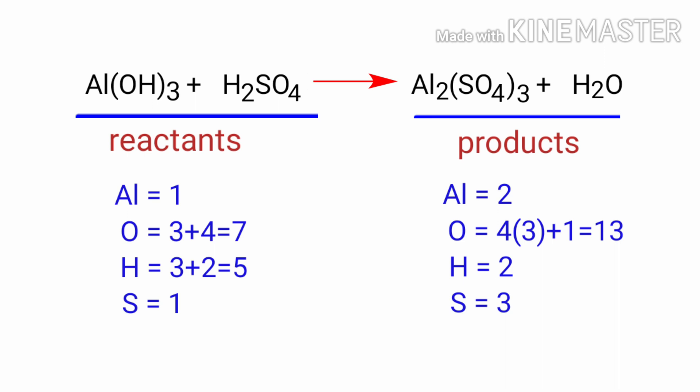To balance the chemical equation, we need to make use of coefficients. A coefficient is a number that we place in front of a chemical formula.